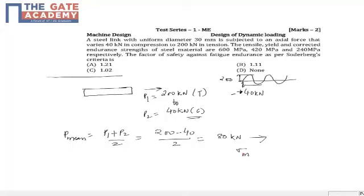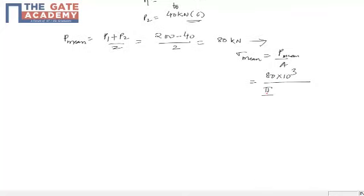The stress corresponding to this will be the mean stress, which is p_mean by area, which is 80 kilonewton times 10³ divided by π/4 times diameter 30 mm squared. This gives 113.17 MPa as the mean stress.